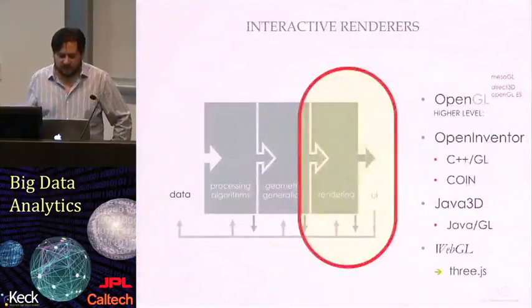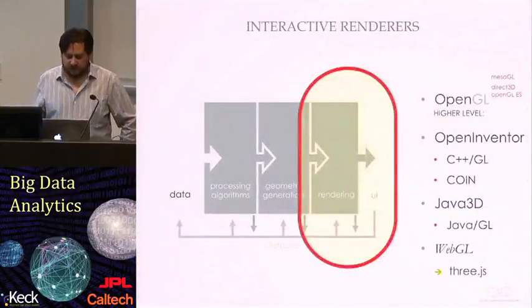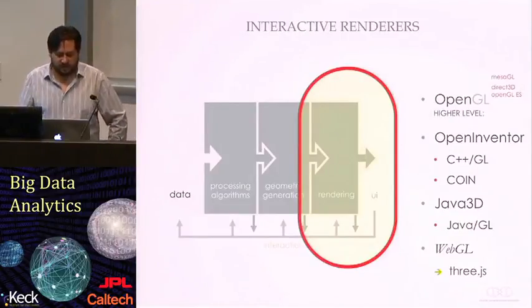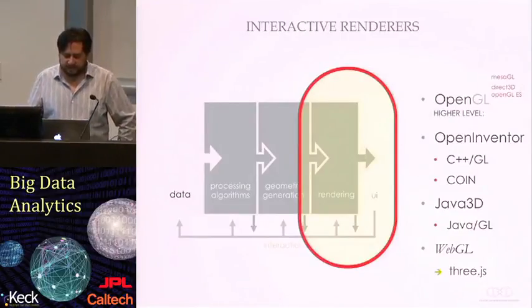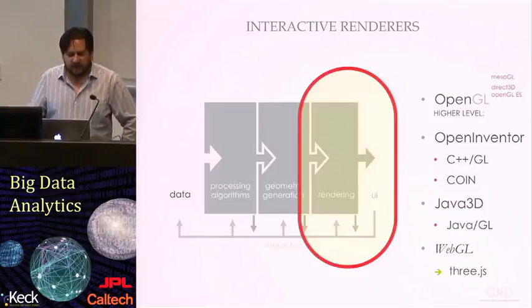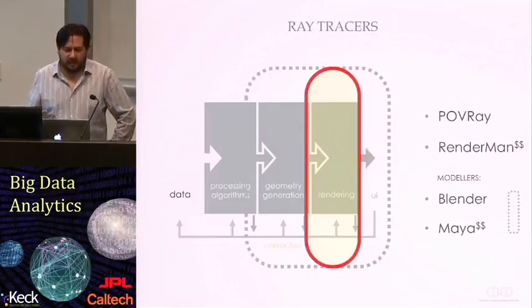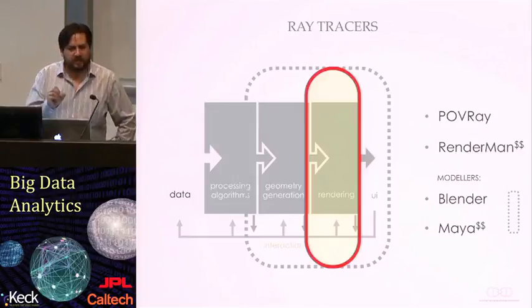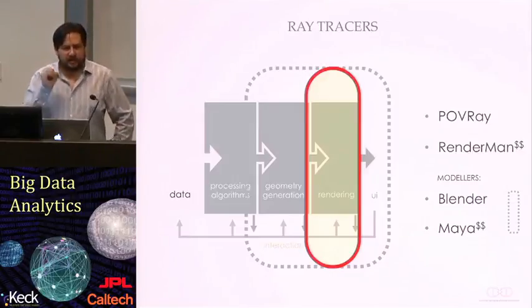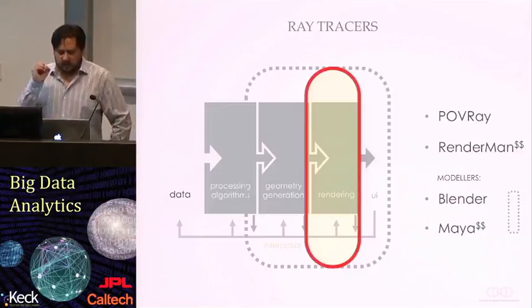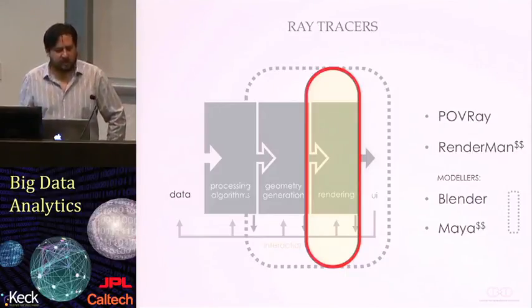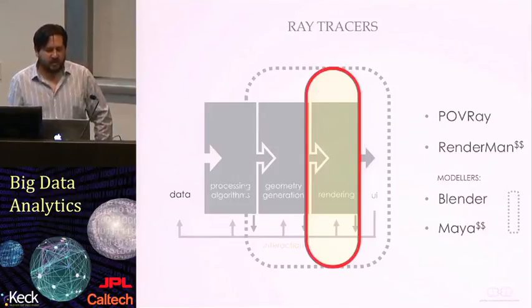So that's OpenGL, that's Open Inventor, and there's also a version for Java called Java 3D. But another way to look at renderers is not the interactive renderers, but renderers that do a much better job of going pixel by pixel and figuring out the color, the shadows, the specularity, emissions of light, to create a much sharper image. These are called ray tracers.